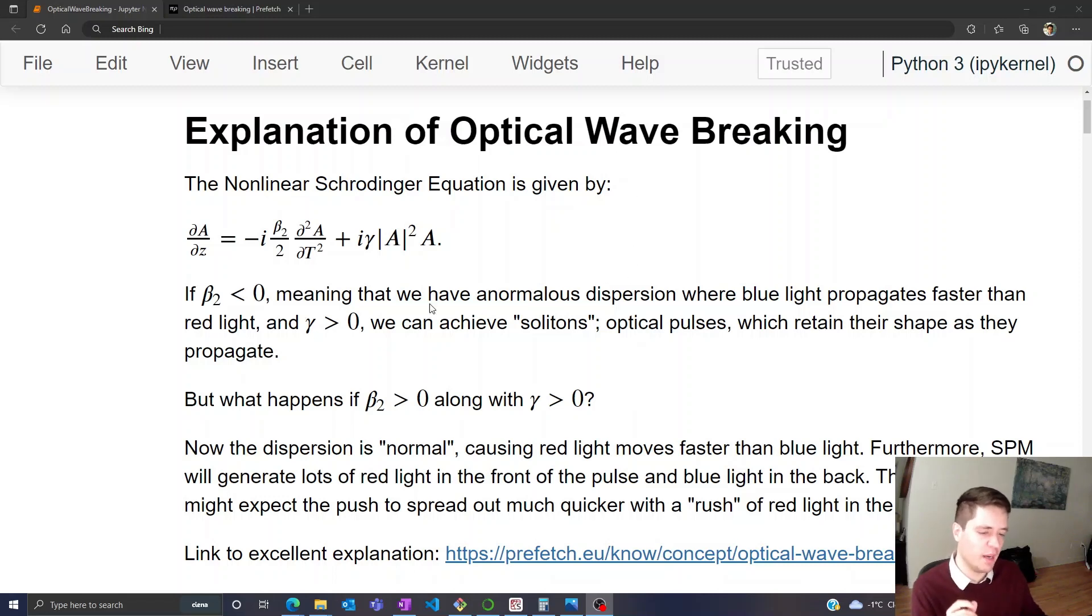And to understand it, we first have to realize that beta 2 being positive means that red light propagates faster than blue light, while the self-phase modulation we talked about before still causes red light to be generated in the front of the pulse. So now we have a strong generation of red light here that gets pushed forward very quickly by anomalous dispersion. So actually what we'll end up seeing is almost an optical shockwave being created where all of the red light are piled up in the front very quickly, and we get some interesting behavior there when the slope becomes very, very steep.